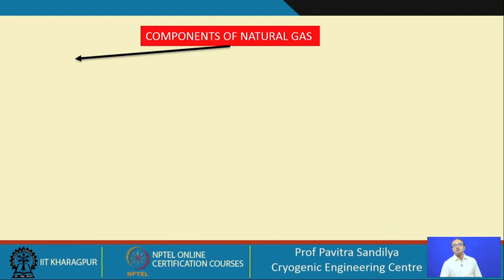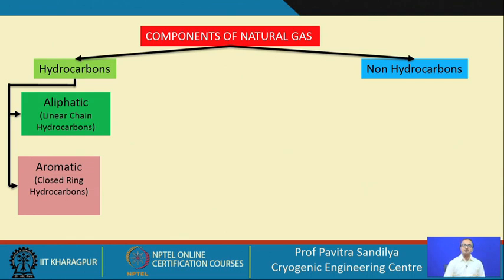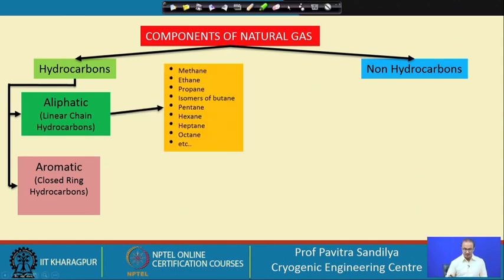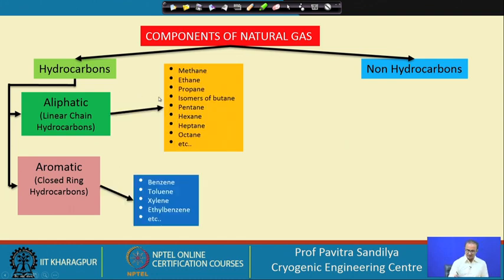Let us now look into the various components of natural gas. Natural gas has broadly two types of components: hydrocarbons and non-hydrocarbons. Under hydrocarbons, we again have two types. One is aliphatic hydrocarbons, which represent linear chain hydrocarbons. Aliphatic hydrocarbons may be alkanes, alkenes, or alkynes.